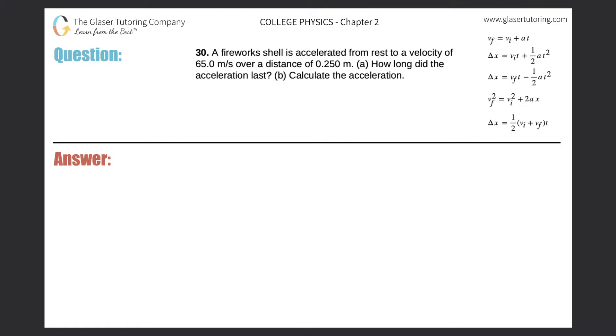Number 30. A firework shell is accelerated from rest to a velocity of 65.0 meters per second over a distance of 0.25 meters. How long did the acceleration last?